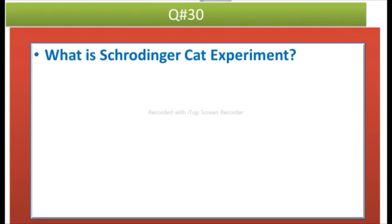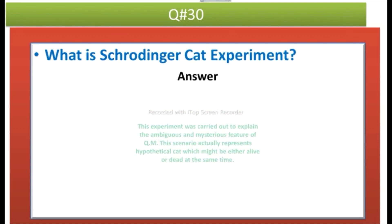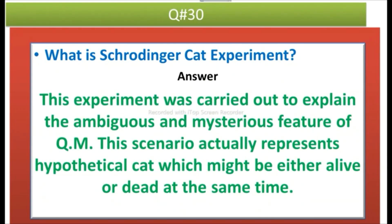The next question is: what is the Schrödinger cat experiment? Answer: this experiment was carried out to explain the ambiguous and mysterious features of quantum mechanics. This scenario represents a hypothetical cat which might be either alive or dead at the same time.